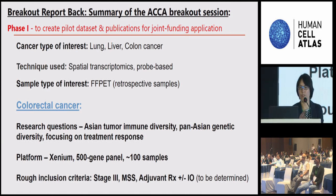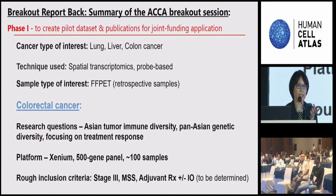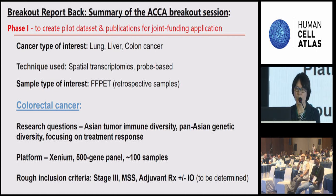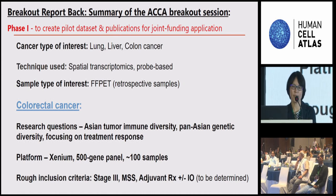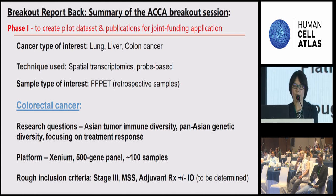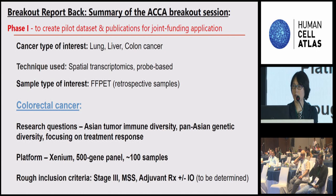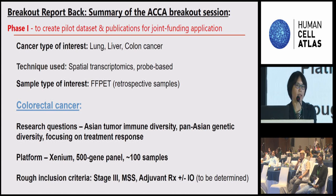This is the breakout report back of the ACCA project. As discussed yesterday, the cancer types of interest are lung, liver, and colon cancers. The proposed technique is spatial transcriptomics. The sample type of interest, for the sake of international shipping, would be FFPE tissue. For the colon cancer project, the questions we want to answer include Asian tumor immune diversity, Pan-Asian genetic diversity, and treatment response platforms. The platform would be Xenium 500 gene panels, with a total of around 100 samples.